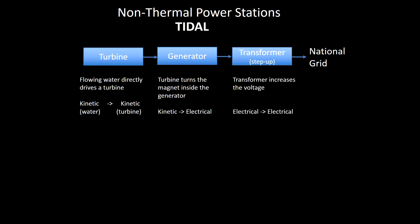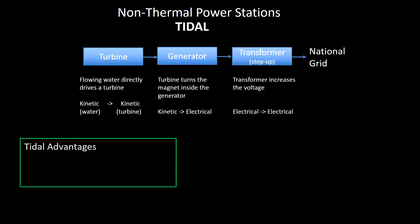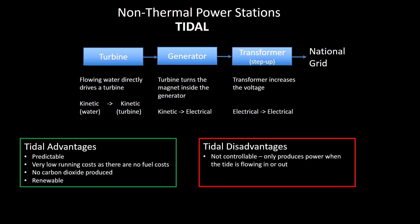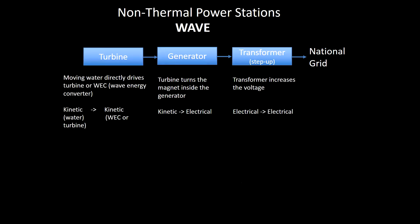Tidal power stations use flowing water driven by the tides. Very predictable because tides are controlled by the position of the moon and the sun. Advantages: no fuel costs, no carbon dioxide, renewable. Disadvantages: you can't control when it's working — it only produces power when the tide is going in or out, with highest output when the tide is moving fastest. Sites are limited to tidal rivers, and the barrages used to house the turbines can be very expensive to build.